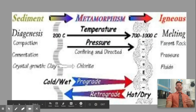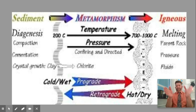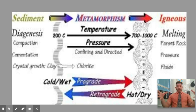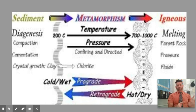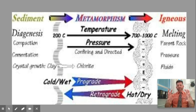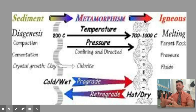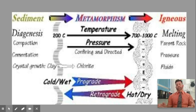Metamorphism occurs in a pretty tight temperature range between 200 and 850 to 1,000 degrees Celsius. It's all that heat and pressure that cooks the rock up and transforms it. It occurs in that range between sedimentary rock — where you have diagenesis, that compaction and lithification — and then it gets warm enough to chemically shift the rock. And if it gets too warm, it turns back into igneous parent rock, which is just magma.